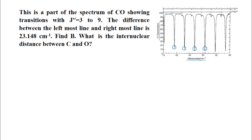This is just a part of the spectrum of carbon monoxide showing transitions with J double prime equals 3 to J double prime equals 9. We have talked about in the last lecture that for any transition, the transition happens from J double prime to J prime. So the lines we see here: the first line is for the transition from J equals 3 to 4, the second line is from 4 to 5, the third line is from 5 to 6.